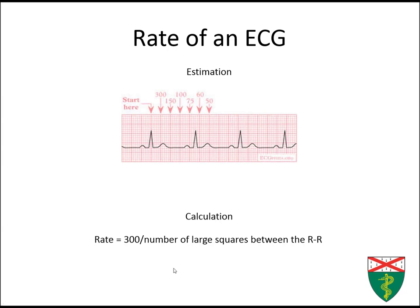Starting with rate: you can calculate it by taking 300 and dividing by the number of large squares between the R-to-R interval. If there's one big box between R-waves, the rate is 300; two boxes, 150; three boxes, 100; four boxes, 75; five boxes, 60; six boxes, 50. Once you get further than that it doesn't hold up as well, but this is a good approximation.